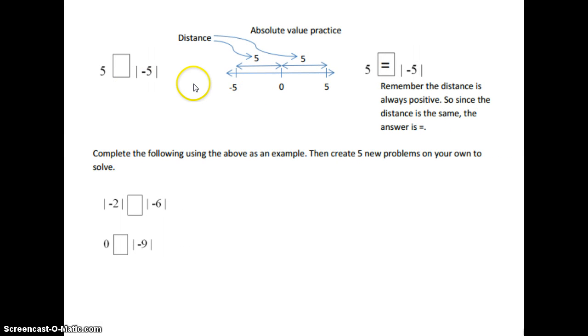And I've created an example here where I have 5 and I'm wondering is it less than or greater than or equal to the absolute value of negative 5. So what I'll do is I will create a number line and I will place the numbers on the number line. Above the number line, I'm placing the distance. So that if you notice, remember that the distance is always positive. So from negative 5 to 0 is 5 and from 0 to 5 is 5. So since the distances are the same, my answer is going to be equal.